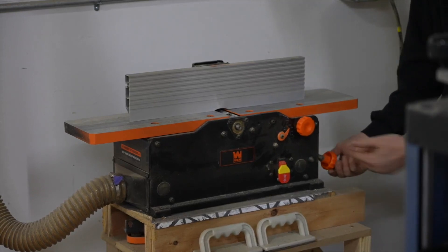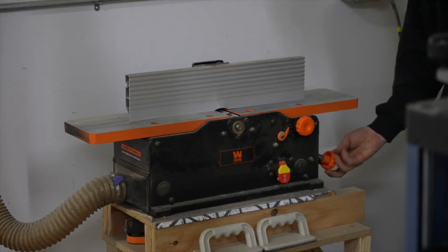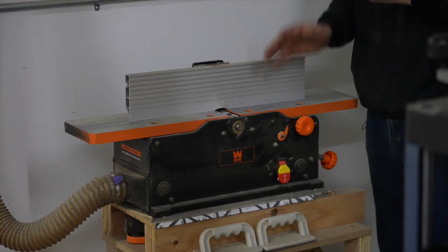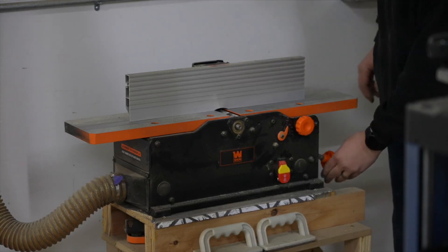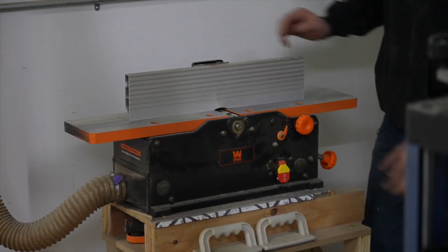And then this side here adjusts up and down the depth of the cut you want. I've cut walnut, orange, maple, oak, all sorts of woods on this jointer.